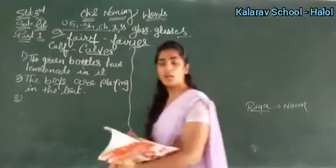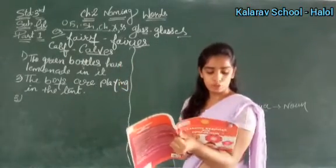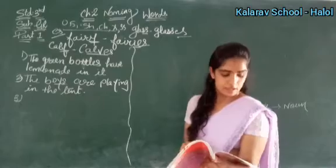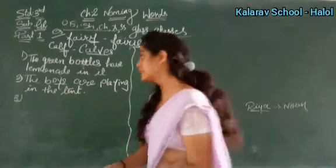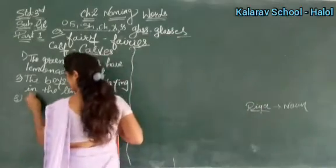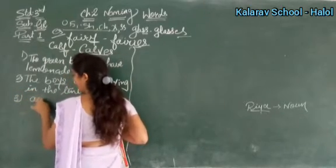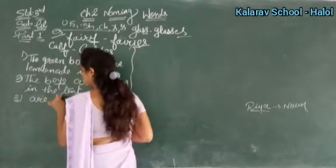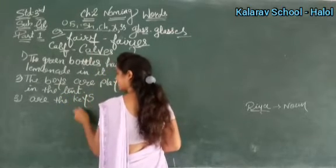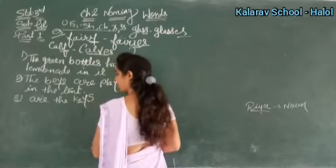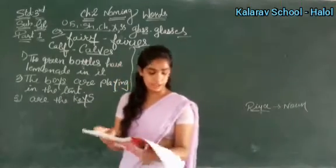Third sentence: 'This is the key to the house.' Key ka plural — Y se pehle E aata hai jo vowel hai, toh sirf S lagayenge: keys. 'This is' ki jagah 'these are' aayega. So: these are the keys to the house. Baaki poora sentence as it is likhna hai.